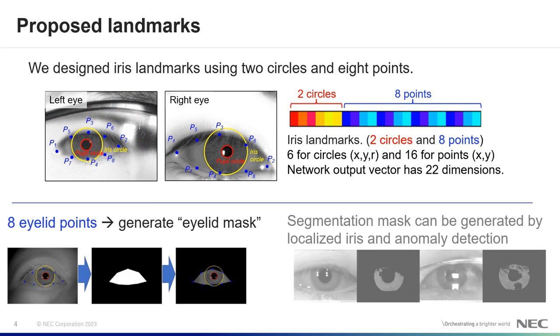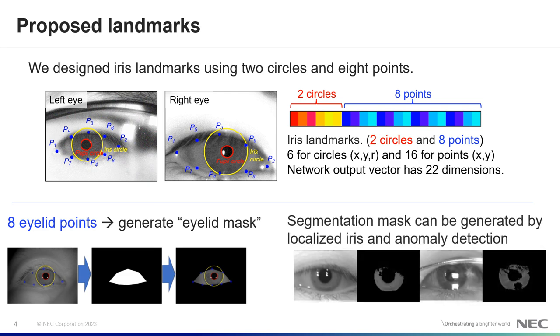And the bottom right figure shows the segmentation masks. The segmentation masks are also generated by using the brightness of the localized iris regions. We use the normal detection of the brightness to remove eyelash and reflection.